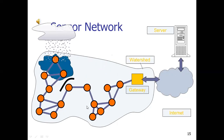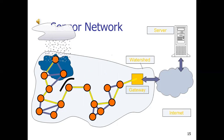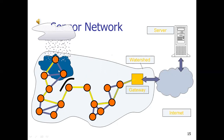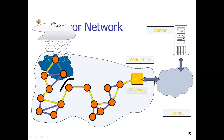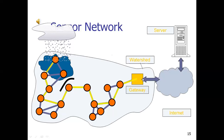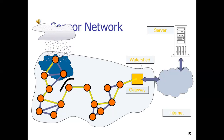If there is any problem and a connection breaks between two nodes, or there is a problem with any one node, they will find an alternate route for the data. In this case, the routing algorithm is the most important algorithm to find the shortest path and reach the destination.